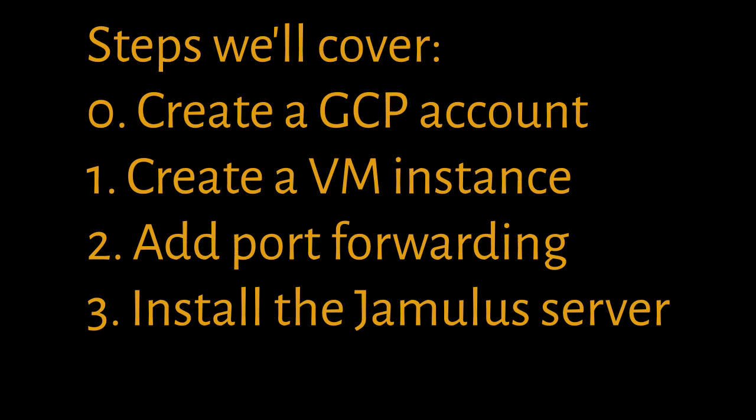Here are the steps involved in setting up the Jamilist server. As a prerequisite, you're going to need to create a Google Cloud platform account — a sort of one-off event. Then you need to create a VM, a virtual machine instance for the Jamilist server, and this is something we do in the Google Cloud platform console. Then we'll have to add port forwarding, which is also an important detail done in the Google Cloud platform console. Once the VM is up and running, we'll jump into the virtual machine's command line interface and run a bunch of commands to actually compile and run the Jamilist server.